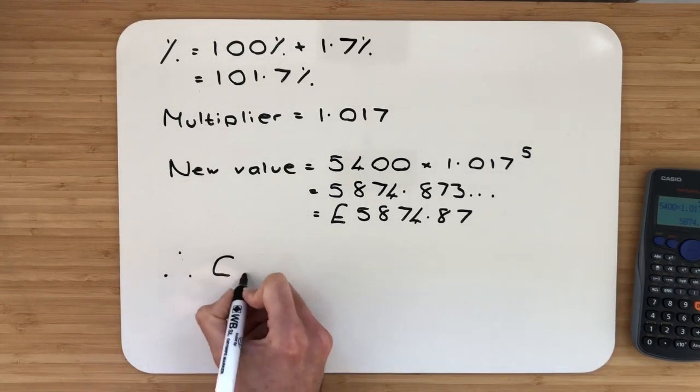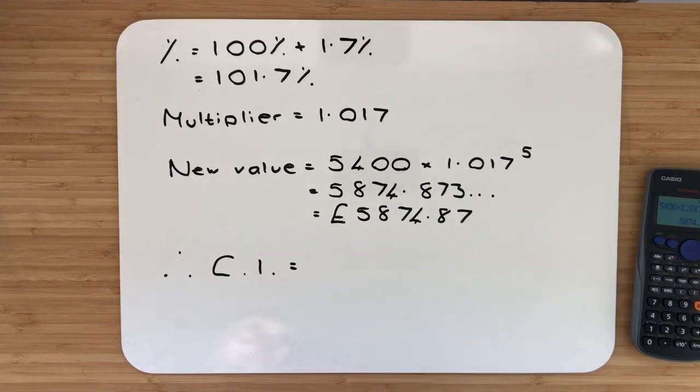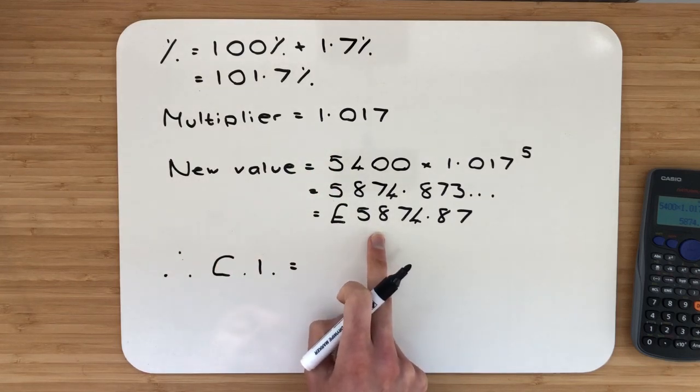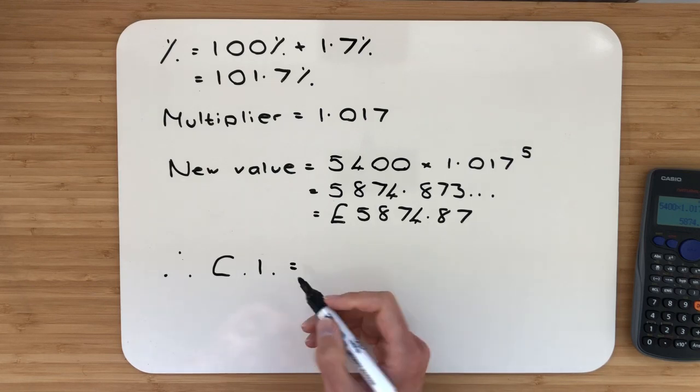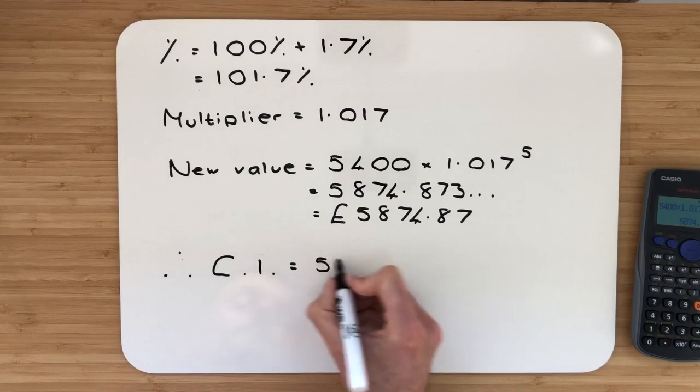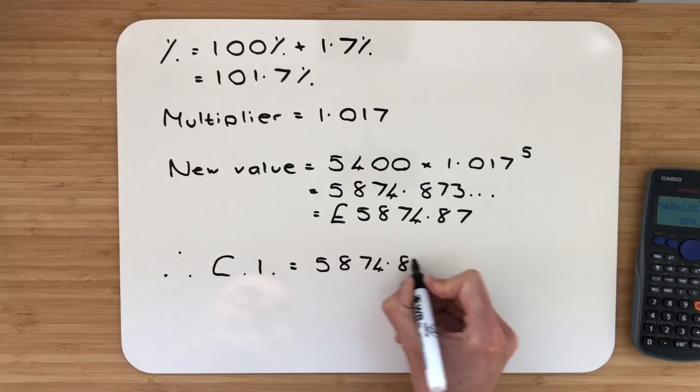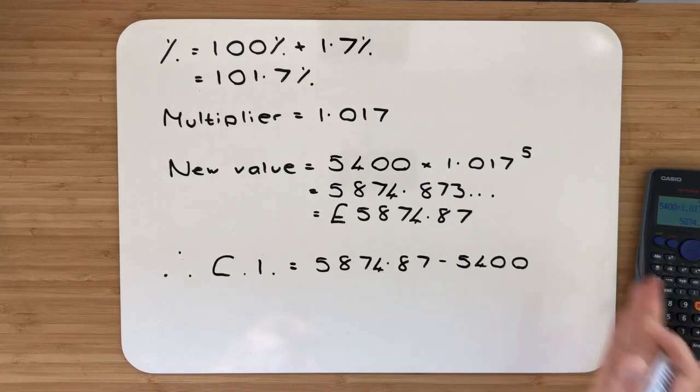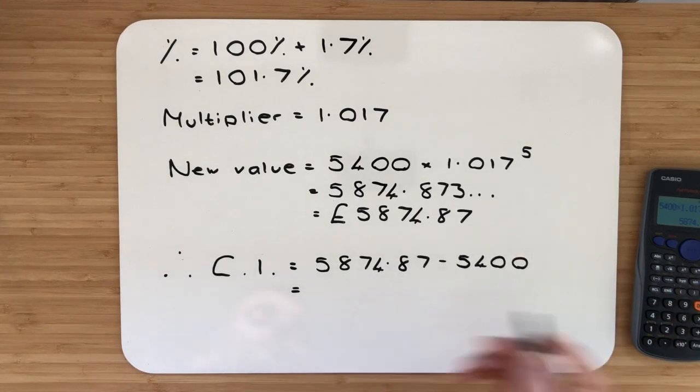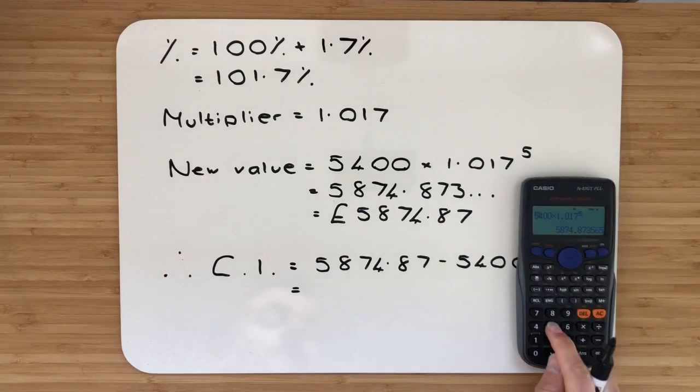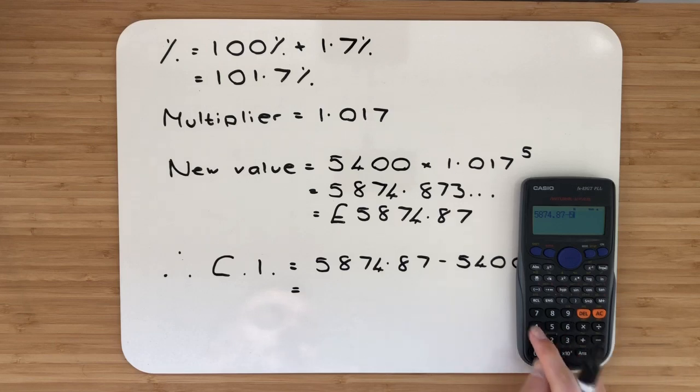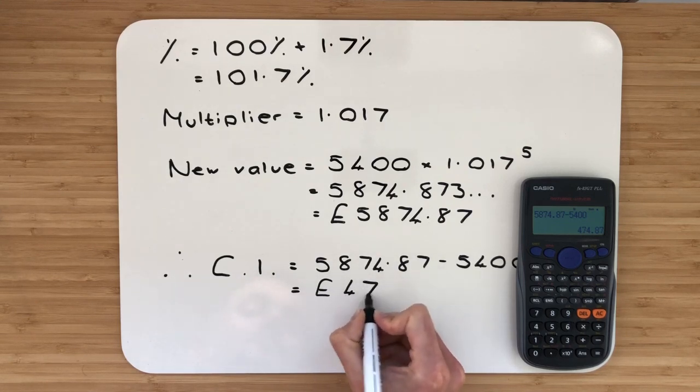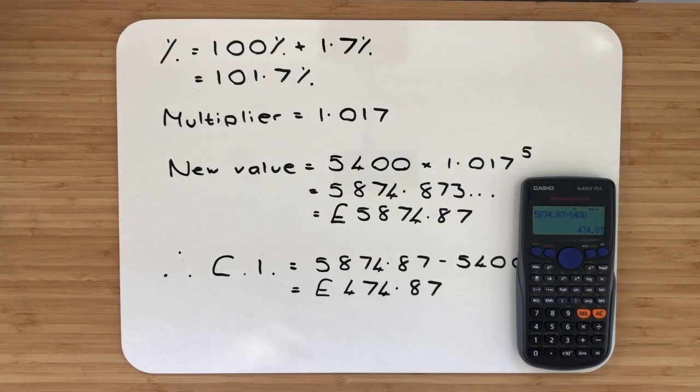The compound interest is the amount of money gained over a period of time. We started with £5,400 and now have £5,874.87. To calculate the compound interest, we subtract them from one another: 5,874.87 minus 5,400. You will have a calculator for these questions, so feel free to use it. It's best not to make a silly mistake. If I take 5,874.87 and subtract 5,400, I should have a final answer of £474.87.